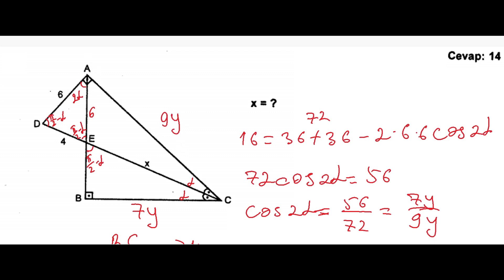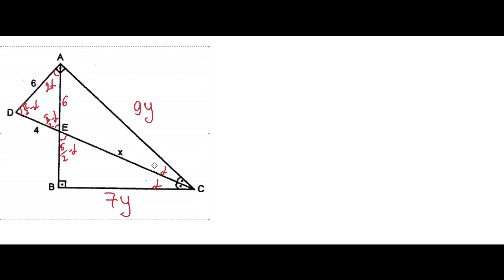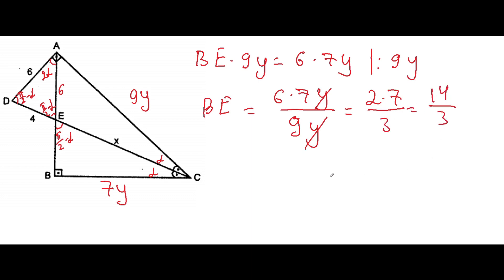And next step is to know the concept of a bisector. Let me copy this one. It will be obvious. Here. If we will use the concept of the bisector from the triangle ABC. We can see that BE times 9y will be equal to 6 times 7y. Here we can divide both sides by 9y. And we can get BE. That BE will be equal to 6 times 7y over 9y. We can cancel y and y. And we can divide by 3. We will get 2. We can cancel the numerator and denominator by 3. It will be 2 times 7 over 3. It will be 14 over 3. We found BE.